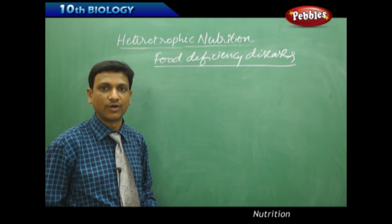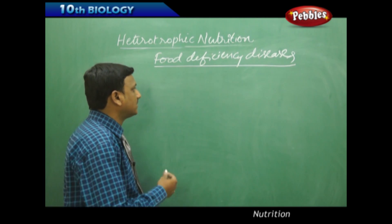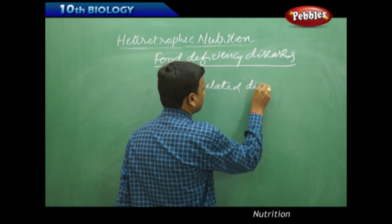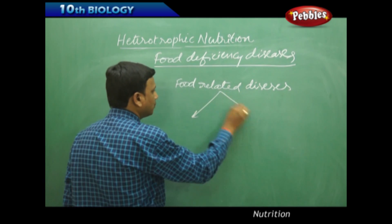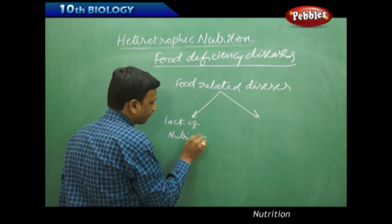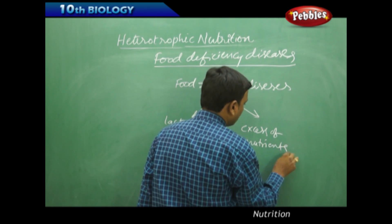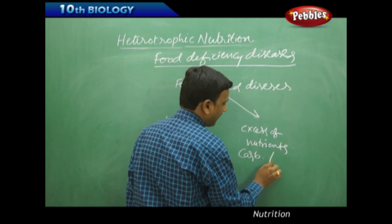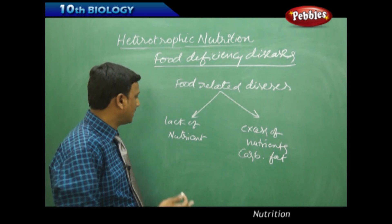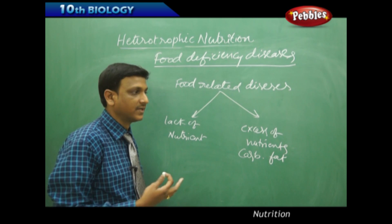Sometimes we call it malnutrition or false nutrition. There are different reasons for this malnutrition. Food-related diseases can happen due to lack of a nutrient in the food, or excess of nutrients like carbohydrates or fats. Excess of carbohydrates or fats in the diet leads to a condition called obesity. Lack of nutrients like protein, carbohydrate or vitamins leads to certain specific diseases.